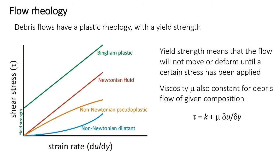Debris flows instead have a plastic rheology, which means they have something called a yield strength. In contrast to water or other Newtonian fluids that start to flow as soon as stress is applied, plastics with a yield strength won't flow or deform until a critical shear stress has been reached — that critical shear stress is the y-intercept, occurring when it exceeds the yield strength. Debris flows also have a constant viscosity as long as the composition, sediment concentration, and materials remain constant. Non-Newtonian pseudoplastics or dilatant fluids, the other two lines, are ones where the viscosity changes depending on the shear stress.